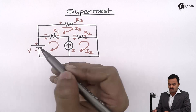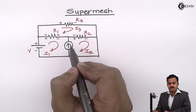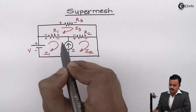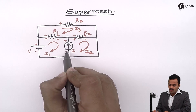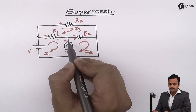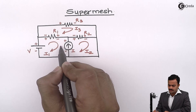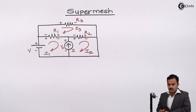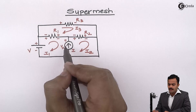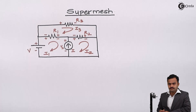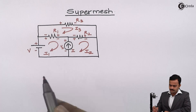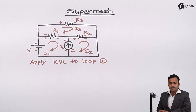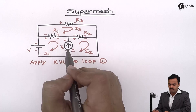This current source is actually a power source, meaning it will have a voltage across it. Let's mark the polarity and consider the voltage of this current source as Vx. Vx is independent of I1 and I2 — I have assumed a random polarity, plus-minus Vx. Now let's apply KVL to loop number one.